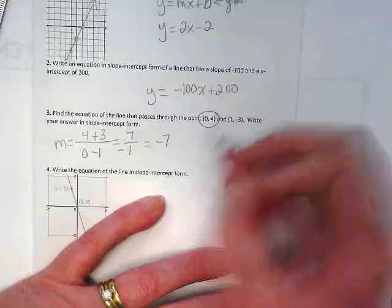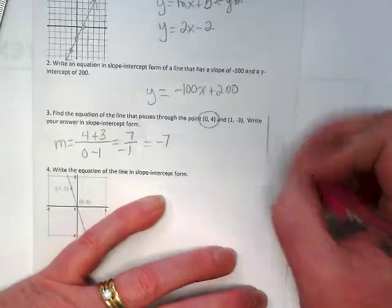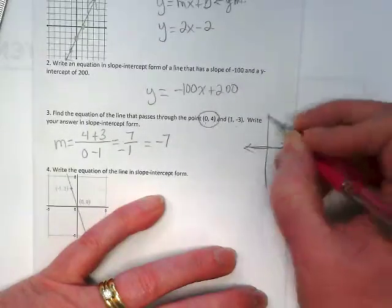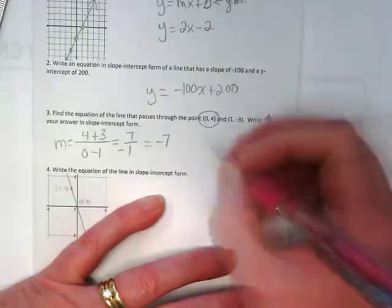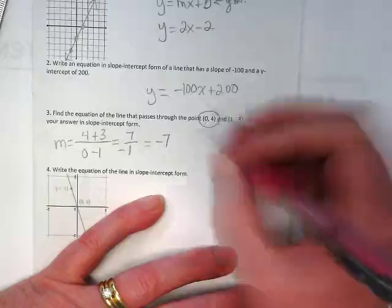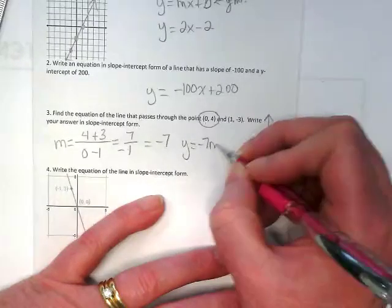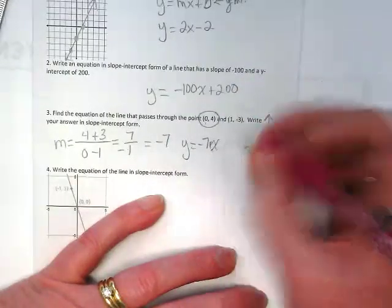This here is my y-intercept. I know that because the x is 0, so if I was going to be graphing this, I wouldn't move right or left. I would go straight up to positive 4. And that's where that line would be, except it would be negative because it's negative 7. So y is equal to negative 7x plus 4.